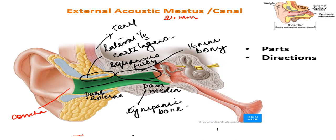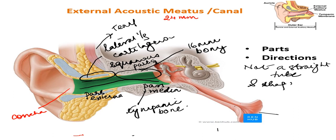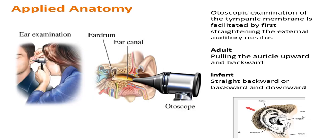Because the canal is curved and S-shaped rather than straight, an ENT surgeon performing otoscopic examination needs to pull the auricle upwards and backwards in adults to straighten it. In infants, however, it is a straighter tube and is pulled straight backwards. Even the ear-pieces of a stethoscope are angulated and S-shaped to allow easy movement inside.